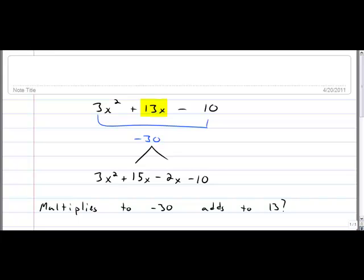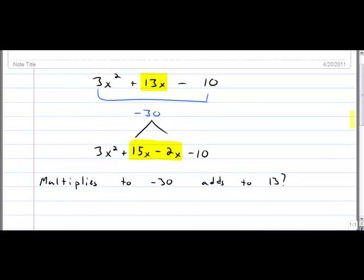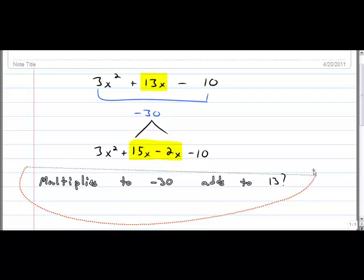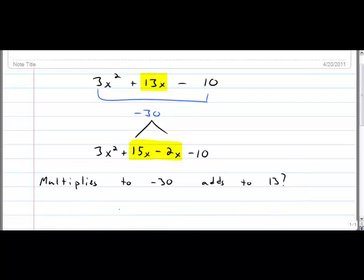Alright, stay with me. We split the middle term. There are 13x's, we can't change the number of x's. But I certainly do have the ability to say 13x's is equivalent to 15x's take away 2x's. So we split the middle term, there was really one proper way to split it. That came down to the multiplies to negative 30 and adds to 13.